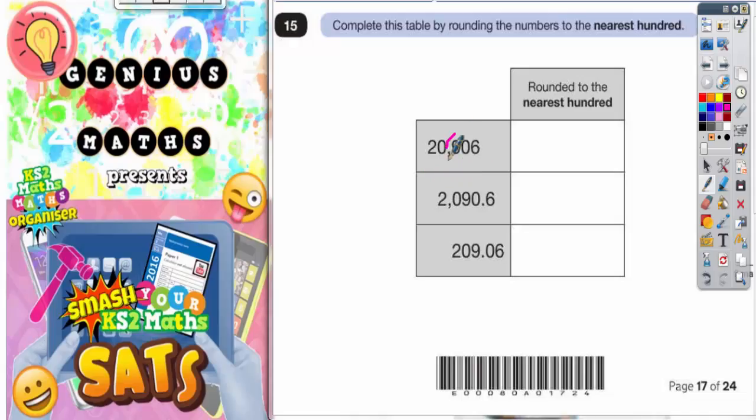Two thousand and ninety point six - well that's two thousand, zero hundred and nine point six, so the zero is in the hundredth column. This one is two hundred nine point zero six, so two hundred is in the hundredth column. Now we need to look at the digit after the hundredth column.